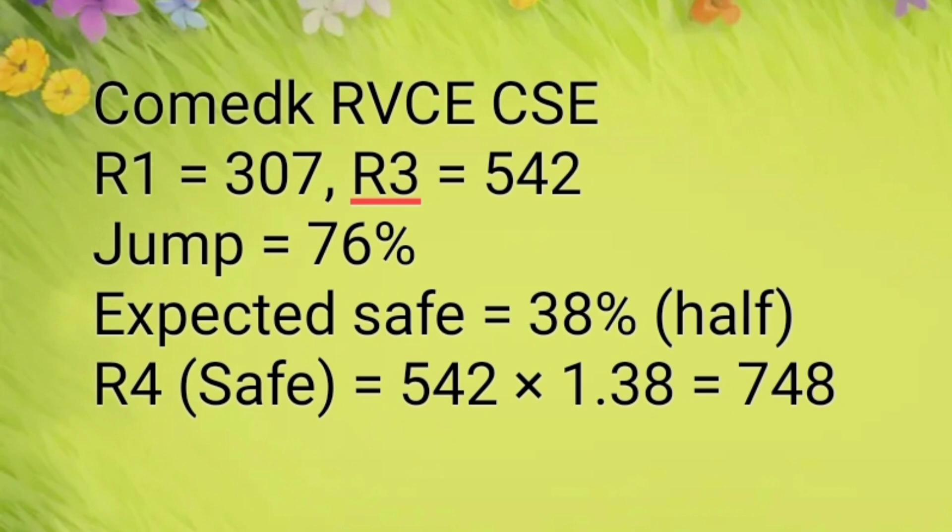I will tell you how to find a safe score. Taking RV College CSE as the example: round 1 was 307, round 3 was 542 — a total jump of 76%. You cannot expect the same jump in round 4. Assuming you get half of that, which is 38%, the safe score calculation is: 542 × 1.38 = 748. So up to rank 750, you can safely think it may be achievable in round 4. You can apply this method for your own branch and college — expect at least half the round 1 to round 3 jump between round 3 and round 4.